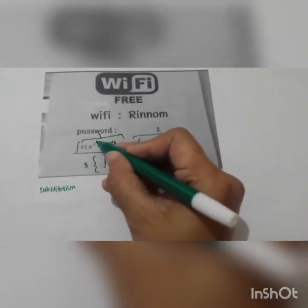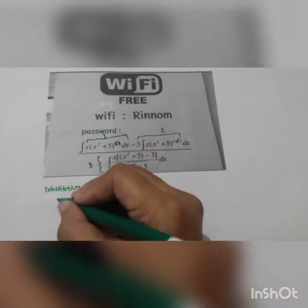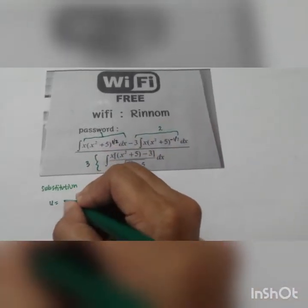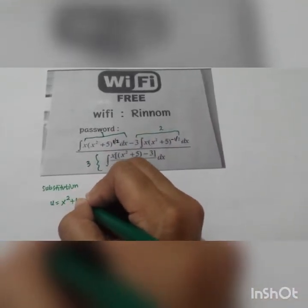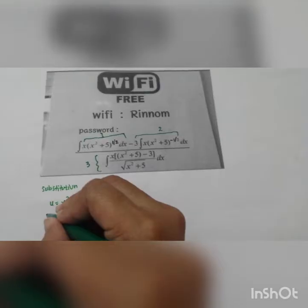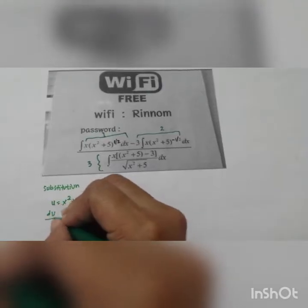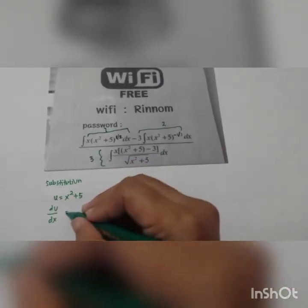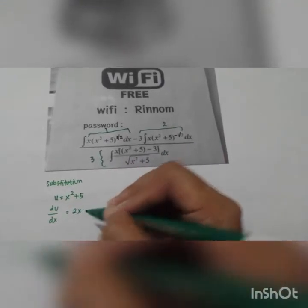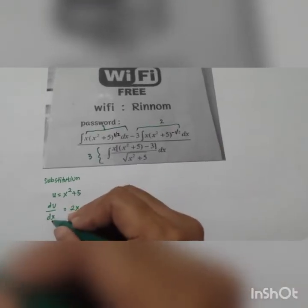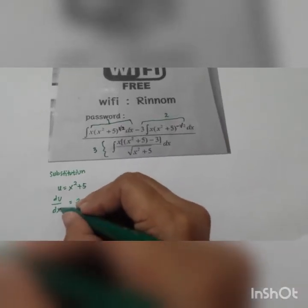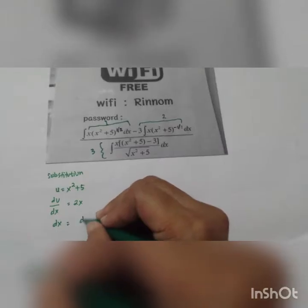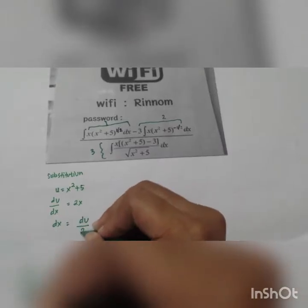We have to substitute the component in the bracket. Let's say that x² + 5 is u. So we have du/dx, which means the derivative is 2x. So we are going to substitute dx — that is, dx = du over 2x.